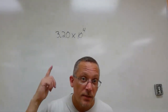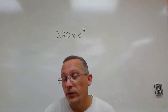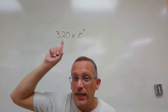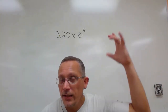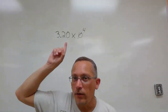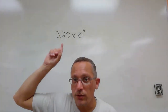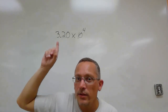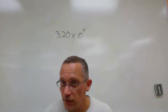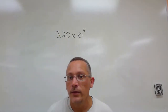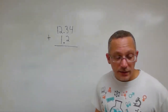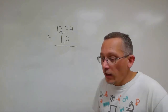Scientific notation makes counting significant digits easy. When a number is written in scientific notation, all digits in the coefficient are significant, and all non-significant digits end up in the power-of-ten part. So 3.20 × 10⁴ has three significant digits — just count the digits in 3.20.